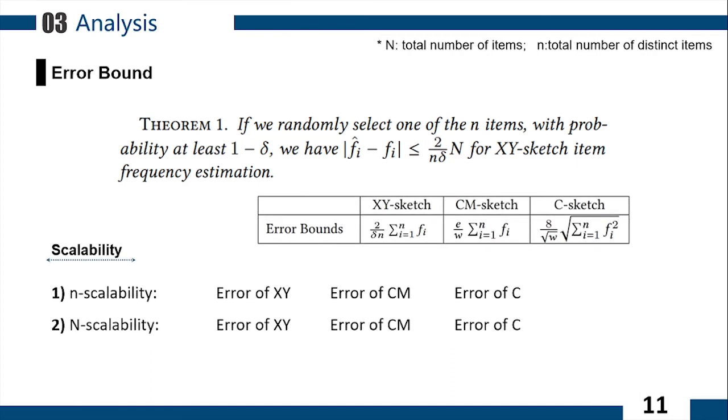Comparing the error bounds of the traditional sketches, we can see that XY-Sketch has good scalability. From Table 1, when the value of n increases, the error bounds of XY-Sketch and C-Sketch decrease, whereas the error bounds of CM-Sketch are unchanged. It means that when big N is given, the error bounds of XY-Sketch and C-Sketch decrease as the number of distinct items increases.